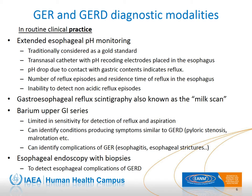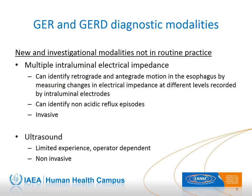Endoscopy is a common procedure in modern gastroenterology — not used for the diagnosis of reflux itself, but useful in evaluating esophageal complications of gastroesophageal reflux disease. Investigational techniques not in routine practice include multiple intraluminal electrical impedance, which requires catheter placement in the esophagus; electrodes at various levels identify anterograde and retrograde motion by measuring changes in electrical impedance, and can identify non-acidic reflux episodes combined with pH monitoring. Ultrasound is another non-invasive technique that can show gastroesophageal reflux by detecting opening of the lower esophageal sphincter and fluid movement between the stomach and esophagus.